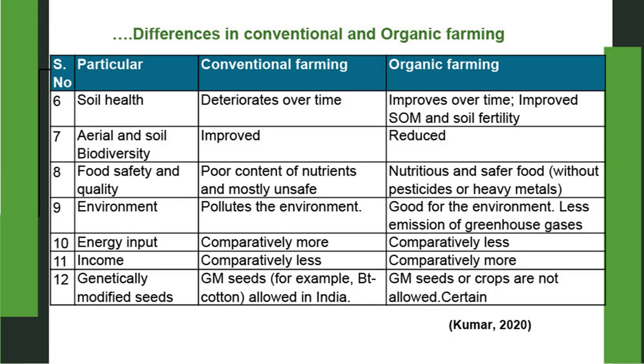Genetically modified seeds are generally allowed in conventional farming, but GM crops are not allowed in organic farming — no country allows GM crops in organic farming. Some studies suggest GM crops are not good for the environment or soil and can reduce diversity of organisms. A study by Seralini from France found that use of GM crops or glyphosate herbicide led to cancer in rats. The safety of GM crops is still doubtful, with no final verdict on the subject.